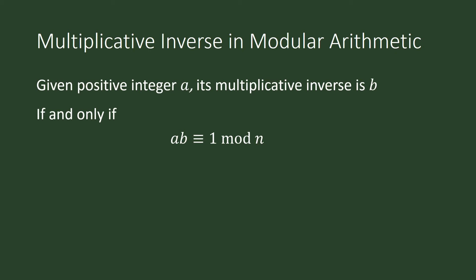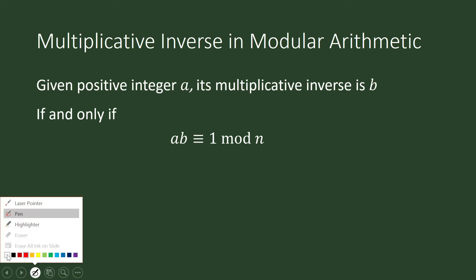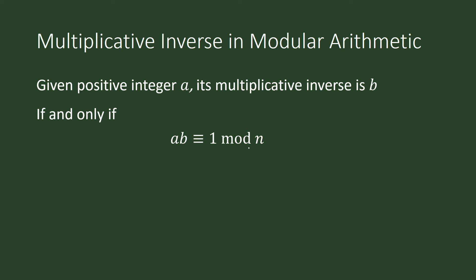We can use two equivalent definitions for this. A times b is congruent to 1 modulo n if and only if a times b minus 1, divided by n, is an integer — it is an exact division.